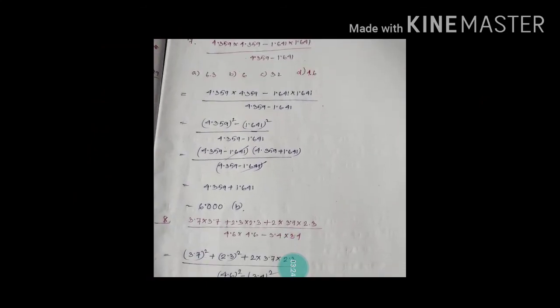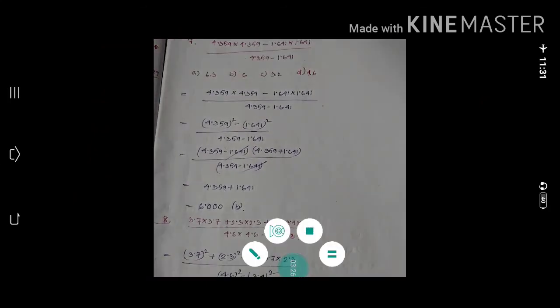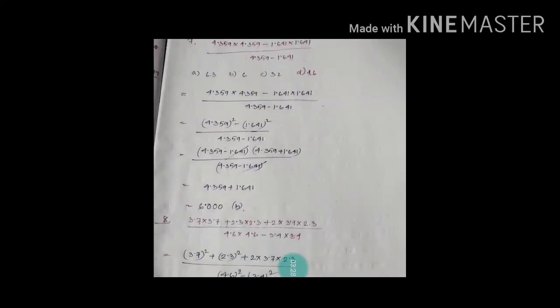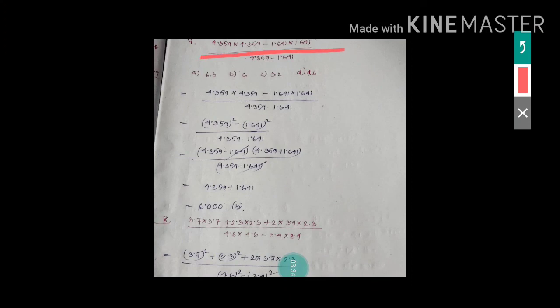Question number seven looks a little tough but it is very easy. In the numerator we have 4.359 into 4.359 minus 1.641 into 1.641 — that means it is in the form a squared minus b squared, where a is 4.359 and b is 1.641. So a squared minus b squared can be written as a plus b times a minus b.